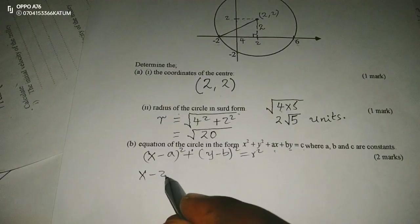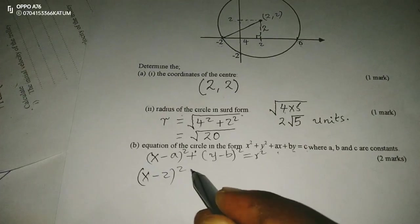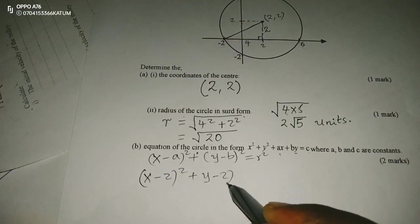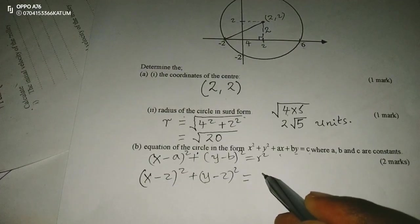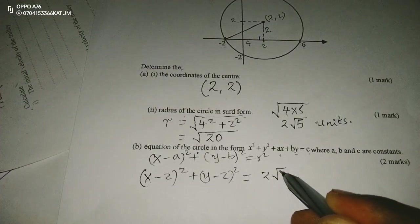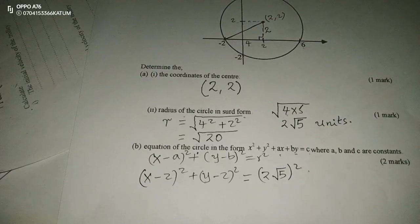Therefore, (x - 2)² + (y - 2)² is equivalent to (2√5)².